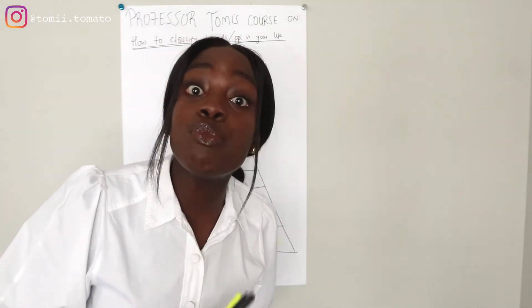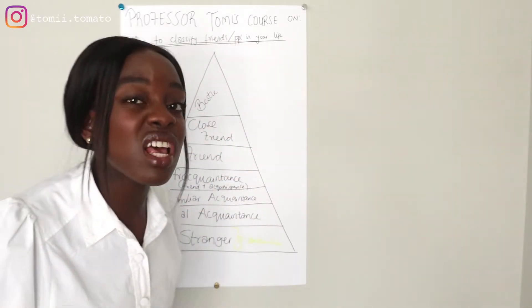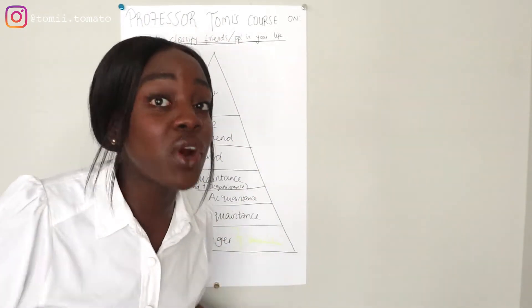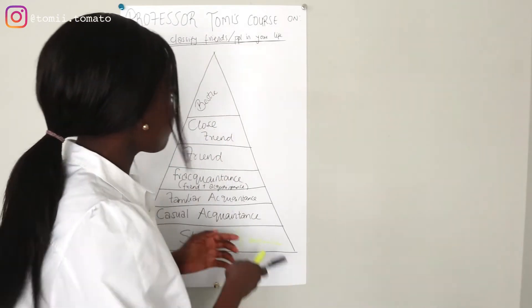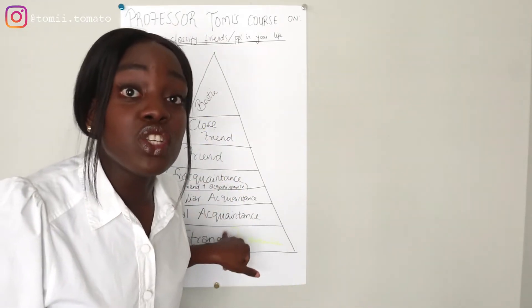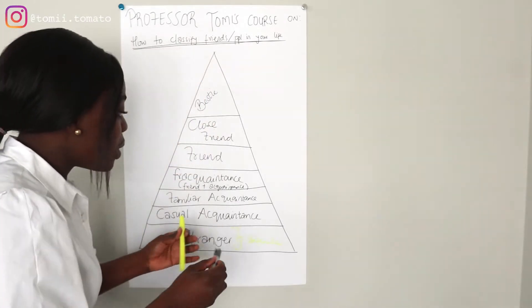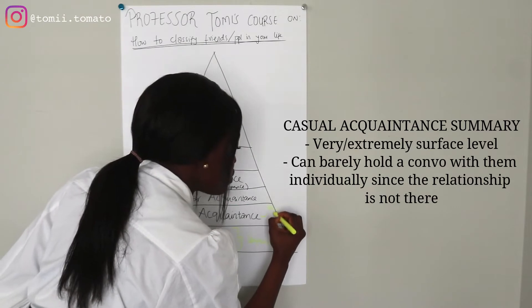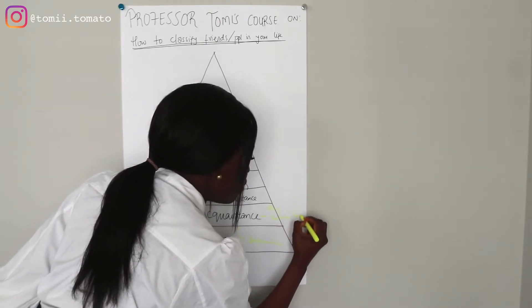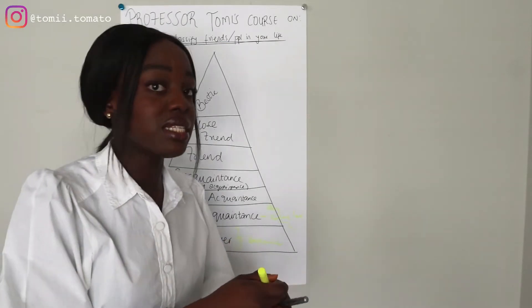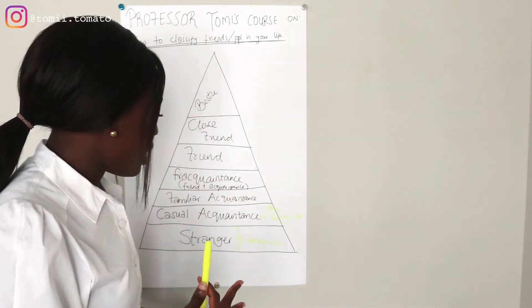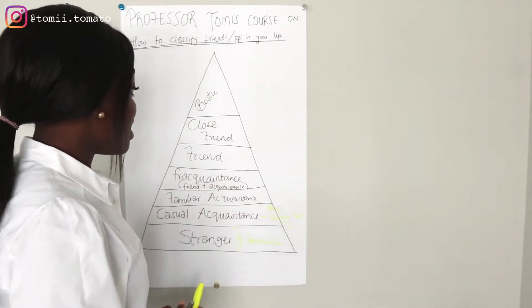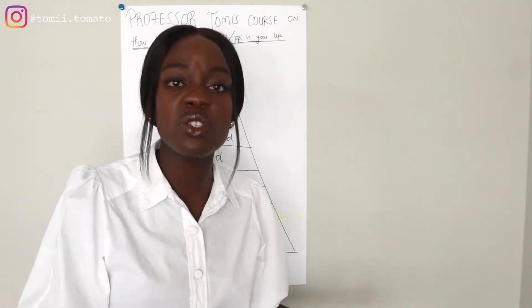This is how you have trust issues — when you skip all these steps and fly straight to friend, close friend, or bestie, and then expect your heart not to be broken. No, you make people earn your trust. Some people don't have the same definition of friendship as you do, and if they don't, then they can't be your friend because you're not compatible. Casual acquaintance is very surface level — maybe you guys help each other out with certain things, but it just doesn't go beyond that.